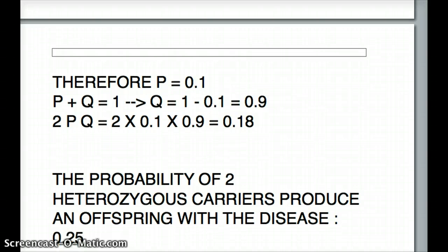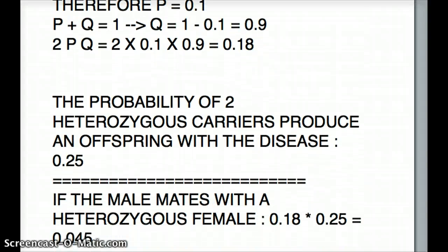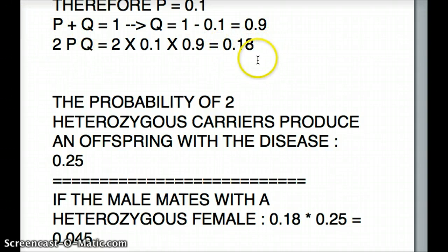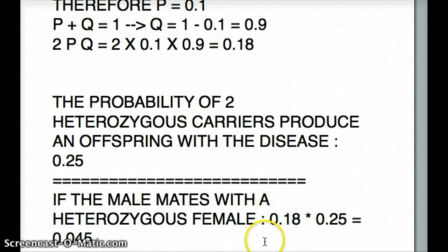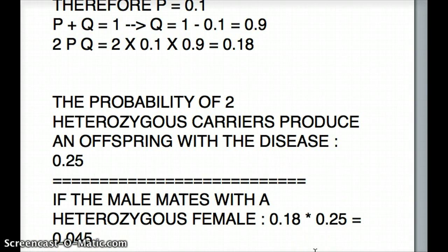So if the male mates with a female who is heterozygous, the probability that the female is heterozygous is 0.18 — that's the carrier frequency, 2pq = 2 × 0.1 × 0.9 = 0.18. The chance of passing the disease to the offspring when both parents are heterozygous is 0.25. So we multiply 0.18 × 0.25 to get the probability for this case.